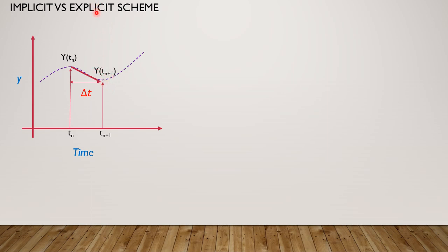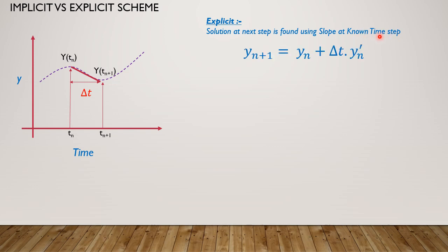We will find y at t_n+1 using your explicit scheme and your implicit scheme. For your explicit scheme, the solution at the next step is found using the slope at the known time step. The equation is: y at n+1 equals y at n — this is your known quantity — plus delta_t, which is the time step we are supplying in your finite element tool, multiplied by the derivative of the function at t equals n. Since delta_t and y_n are both known, the only unknown is y_n+1, so we can estimate it easily.